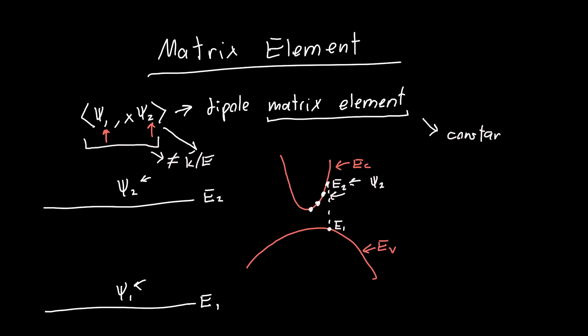So now what's the actual value for this dipole matrix element? You can figure this out using something called k.p theory, or this is the most common way to figure it out. I don't actually know how to do this myself, but we might have future videos on it at some point.